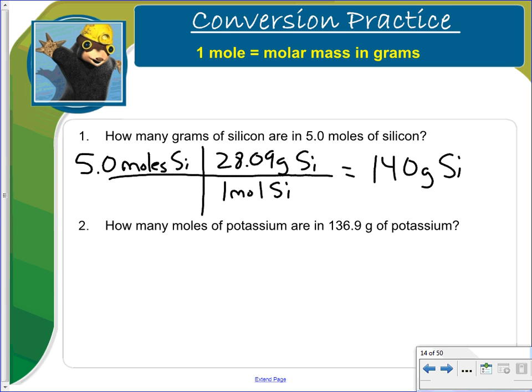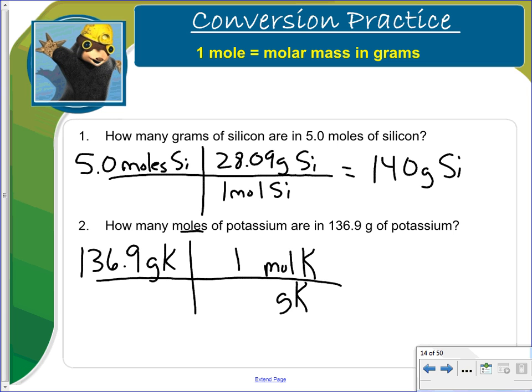How many moles of potassium are in 136.9 grams of potassium. If we want to get rid of grams so it goes on the bottom. We're trying to get to moles, so moles will be on top. This relationship is that 1 mole is equal to the molar mass. And so we go look on the periodic table. Go physically look at your periodic table for potassium and you'll find it's 39.10. Cross out. And so we multiply 136.9 times 1 divided by 39.10. So we get 3.501 moles. That's 4 significant digits because we had 4 right here.